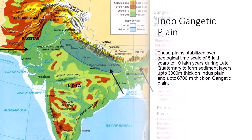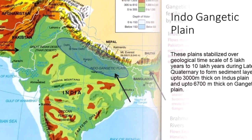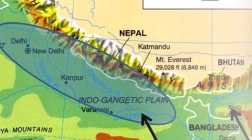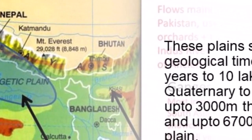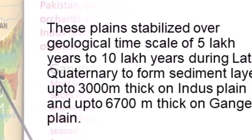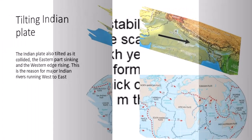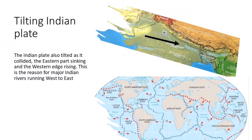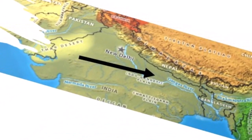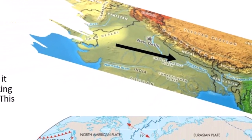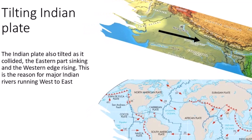The subducting Indian Plate created the subduction plane known as the Indo-Gangetic Plains. These plains stabilized over a geological time scale of 5 to 10 lakh years during the late period to form sediment layers up to 3,000 meters thick on the Indus Plains and up to 6,700 meters thick on the Gangetic Plains. The Indian Plate also tilted as it collided, with the eastern part sinking and the western edge rising — this is the reason major Indian rivers run west to east.